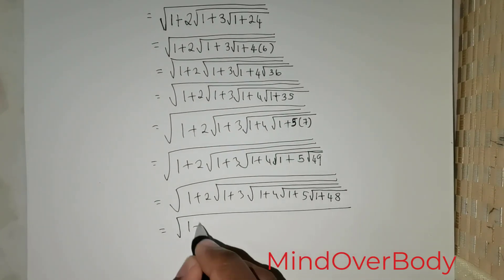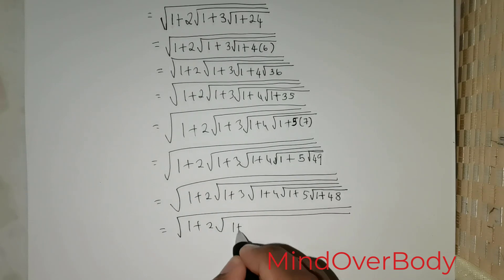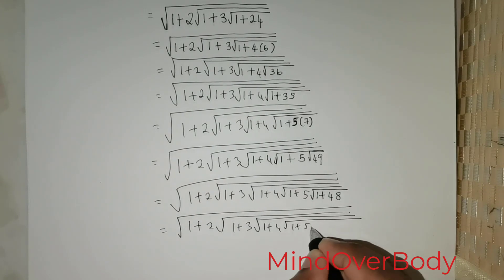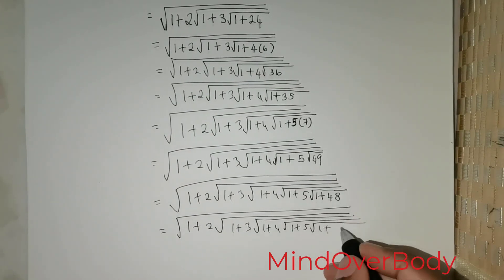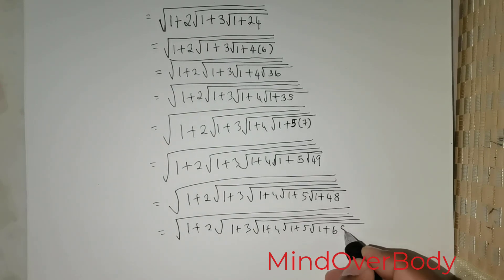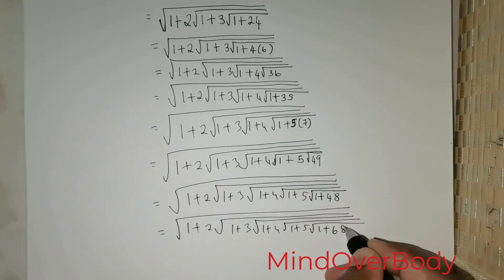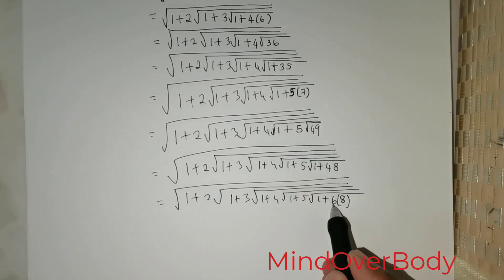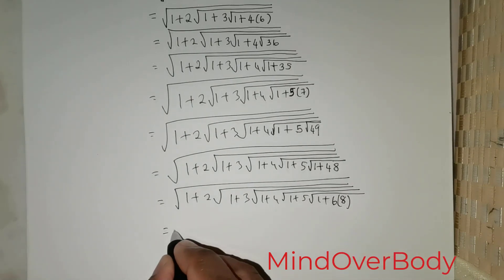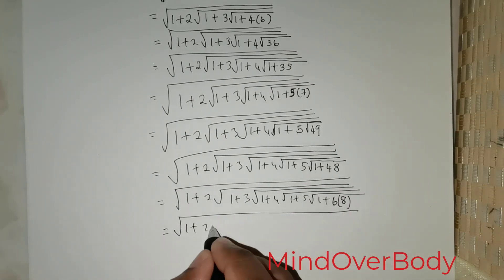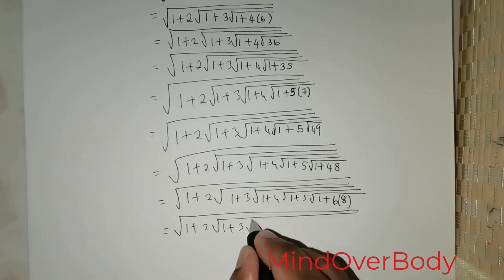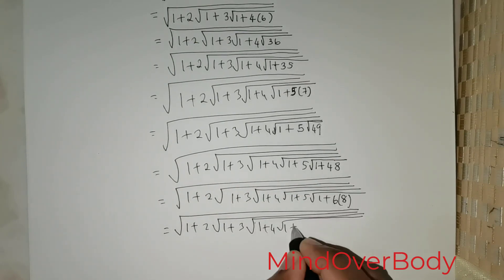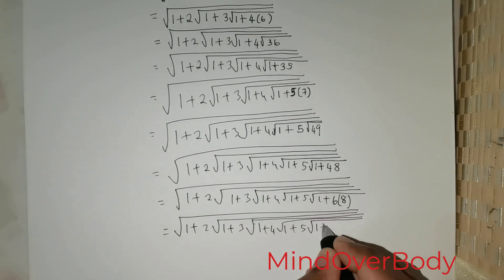So it's going to be: 1 + 2 times root of 1 + 3 times root of 1 + 4 times root of 1 + 5 times root of 1 + 48. I rewrite 48 as 6 times 8. So I have: 1 + 2 times root of 1 + 3 times root of 1 + 4 times root of 1 + 5 times root of 1 + 6 times ... and so on, producing the nested pattern.